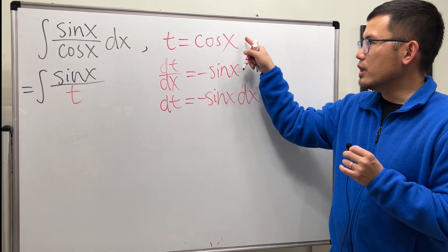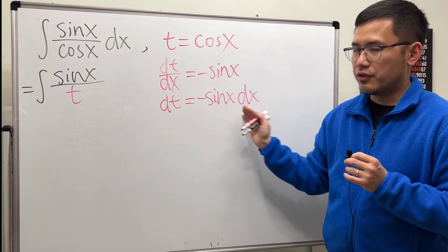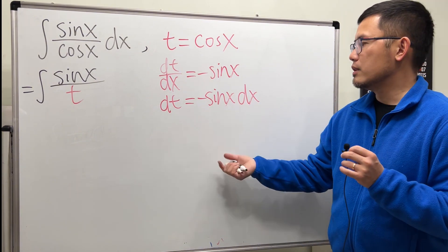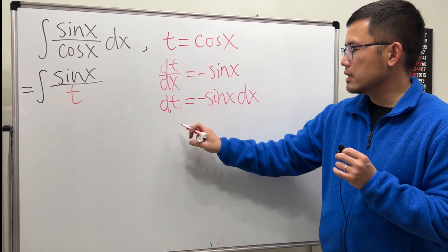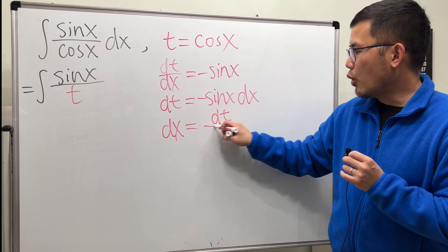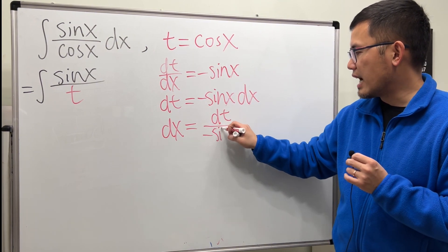And in fact, you can always go from here to here. That's just the differential formula. And then we have to get the dx by itself. So, let's divide this on both sides. That will give us dx equal to dt over negative sin x.